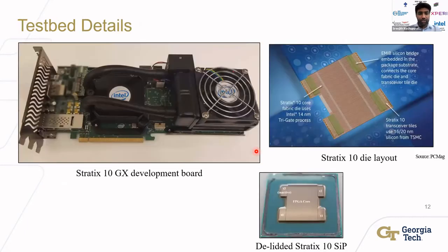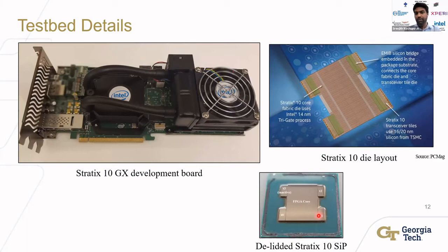For the demonstration we chose an Intel Stratix 10 FPGA in an FBGA package. On the left is the development board with its stock liquid-cooled heat sink, and on the right is the die floorplan and X-ray image. The package consists of five discrete dies — a large central core complex die surrounded by four transceiver tiles at the corners, connected via Intel's embedded bridge technology.